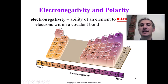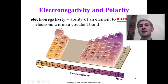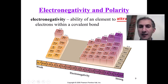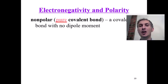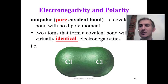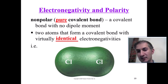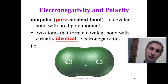We use an electronegativity table to determine which element attracts electrons more. For HCl: hydrogen has an electronegativity of 2.1 and chlorine has 3.0. The larger number means stronger attraction, so chlorine attracts electrons more — making HCl a polar bond. For N2, both nitrogen atoms are identical, so there is no difference — non-polar bond.